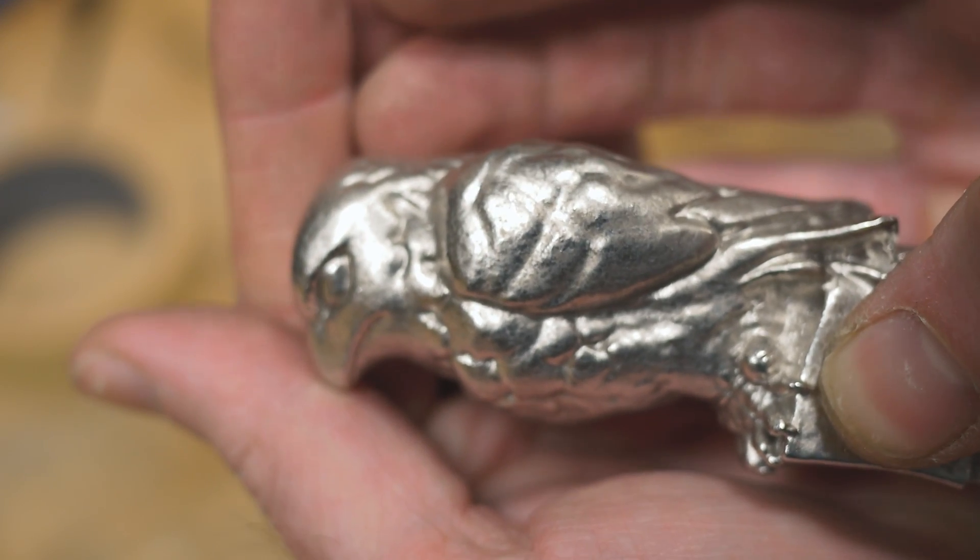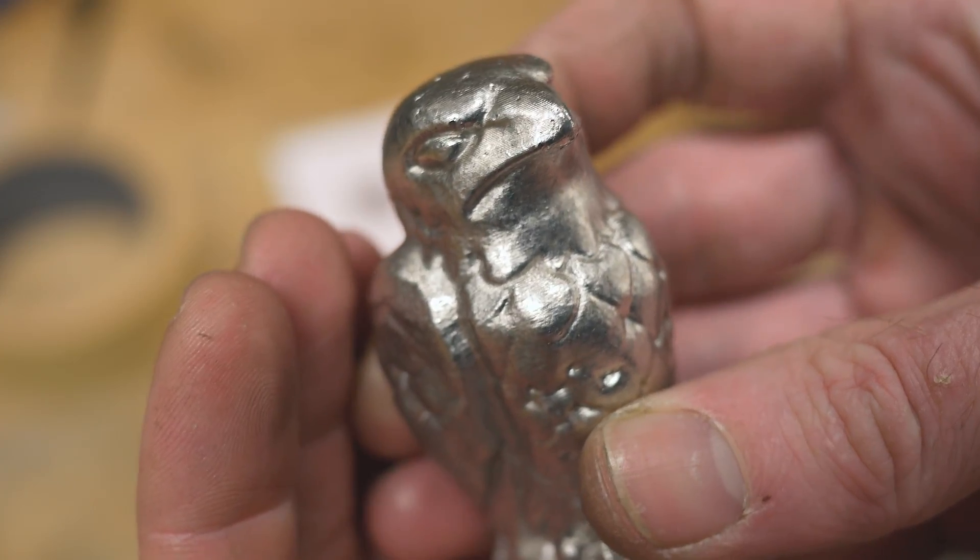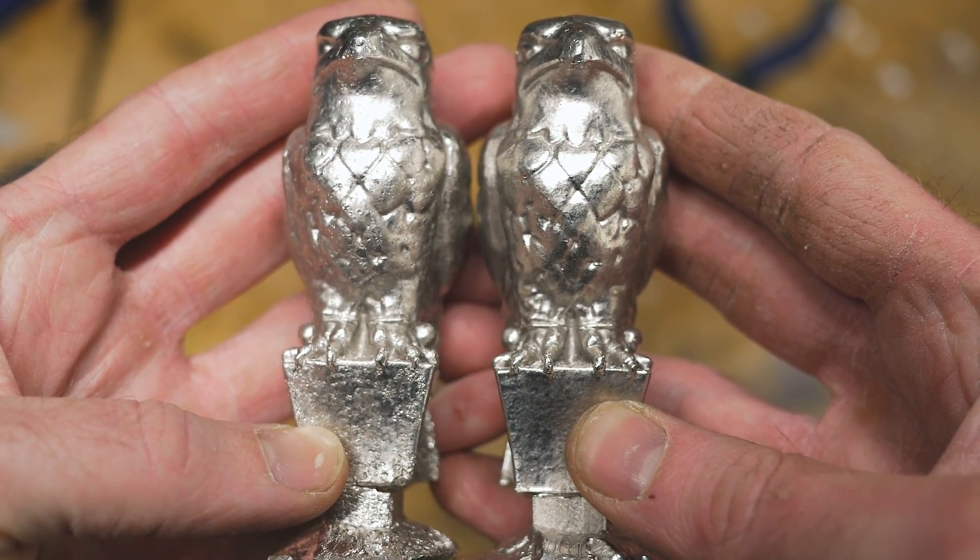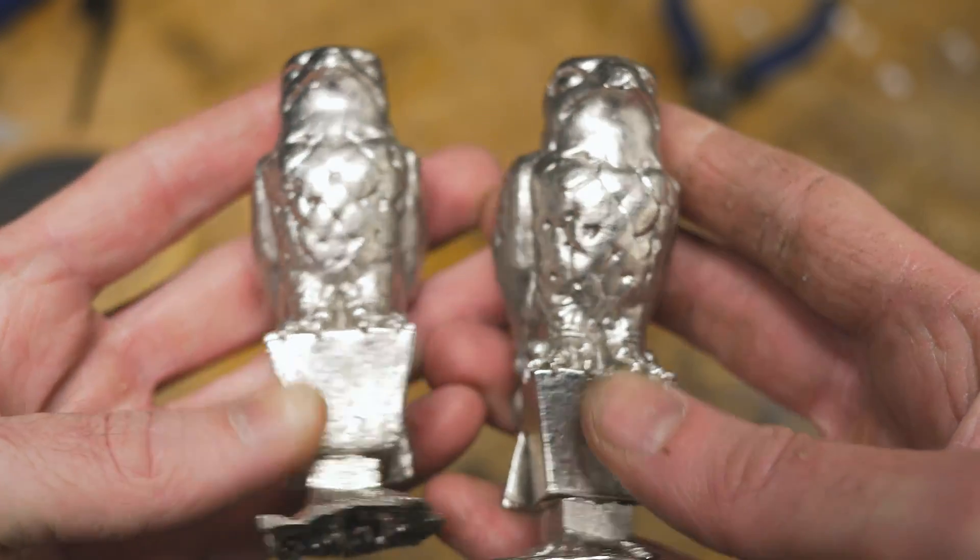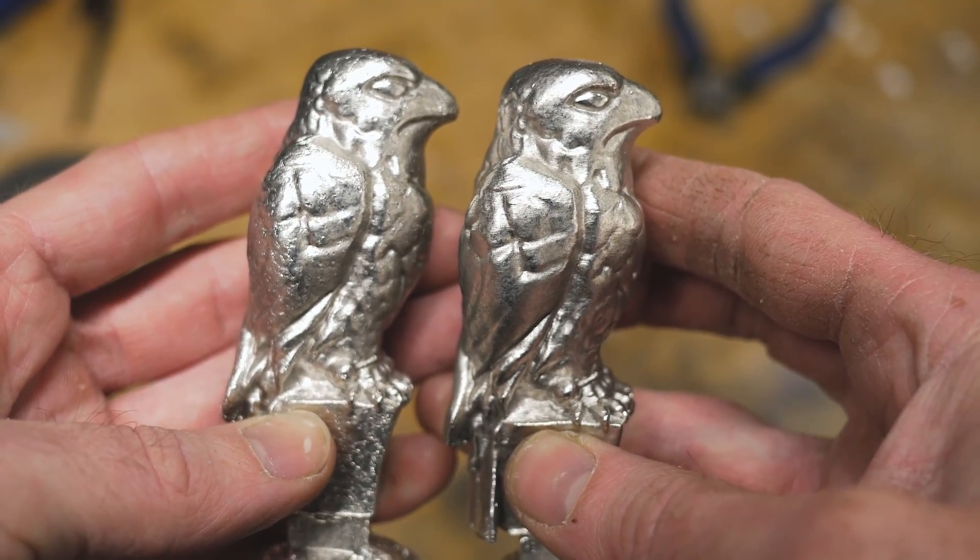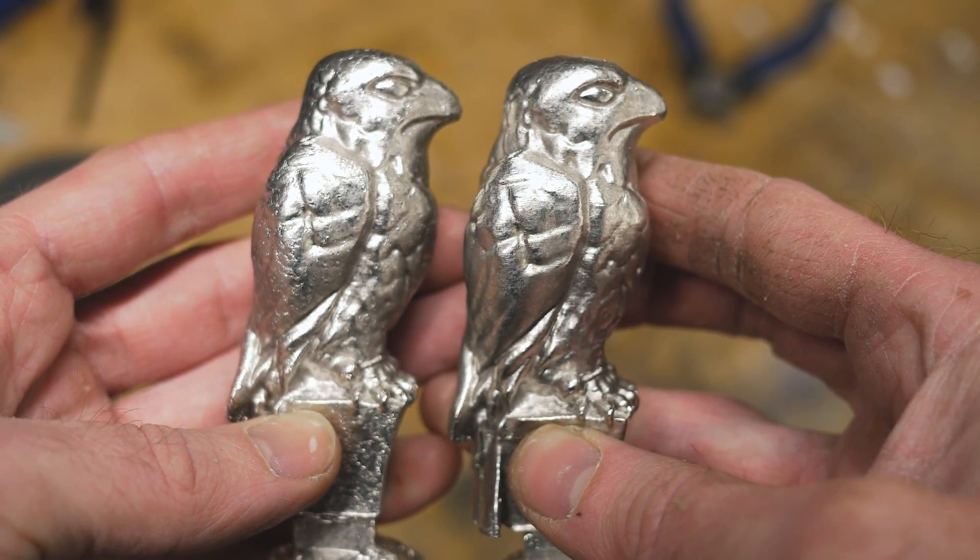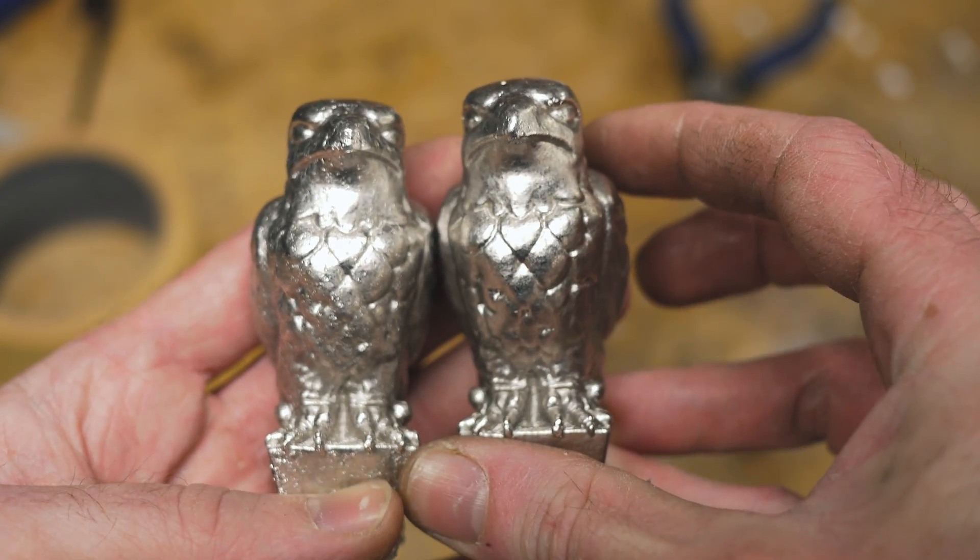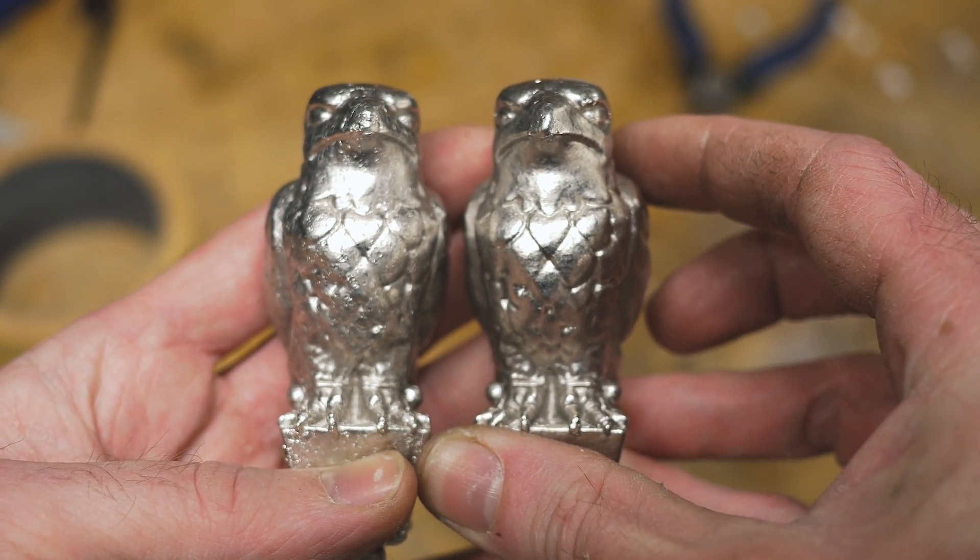Evidently it turns out casting in silicone is just like making pancakes. The first one just never turns out quite right. You can see the difference between the two castings with nothing changed other than the mold already being warm. This also shows you why I wanted to use the silicone mold in the first place. Not only are there no seam lines like a two part mold, but the mold is reusable over and over again.